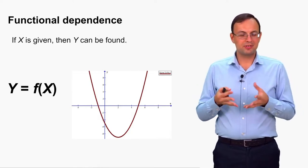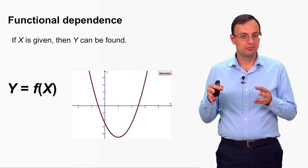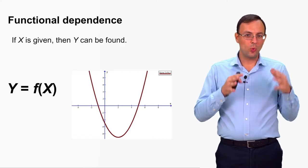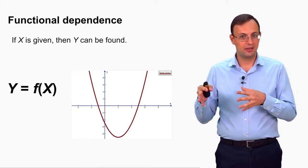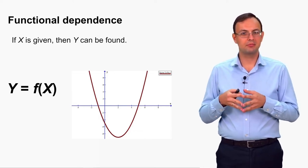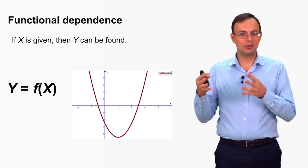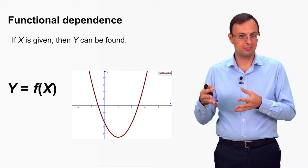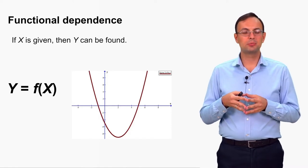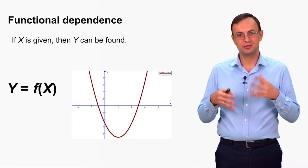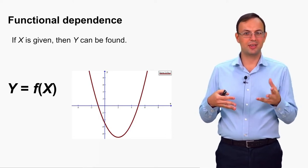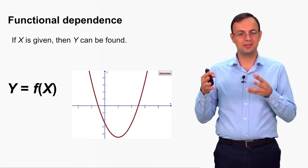It's quite possible that both x and y are random variables. For example, let x be the income of a random person and y be the sum of taxes they pay. In such a situation, if you know the tax rate, you can simply calculate the tax from the income. If someone's income is $1,000 and the tax rate is 13%, you multiply income by 0.13 and get $130.